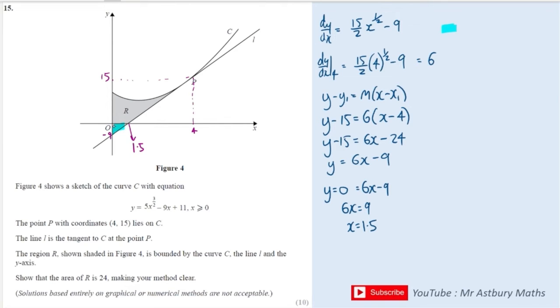that blue area there is a right angle triangle and it has a base of 1.5 and it has a height of 9. So a half base times height will give me 1.5 times 9 over 2, which is 6.75. Okay great.